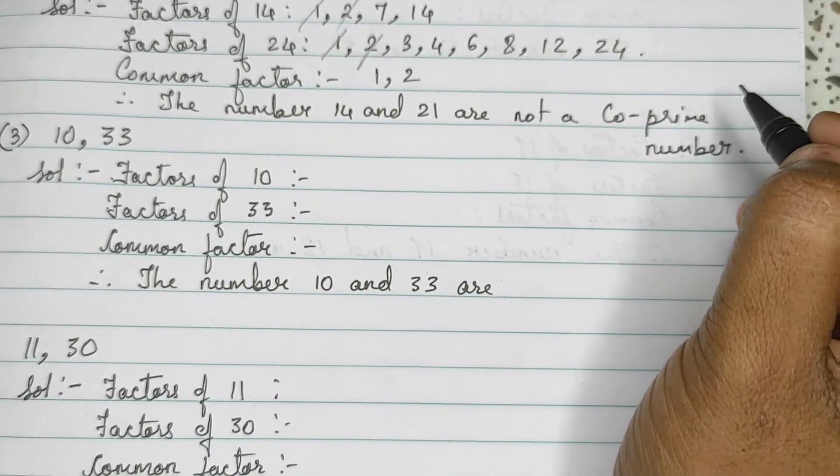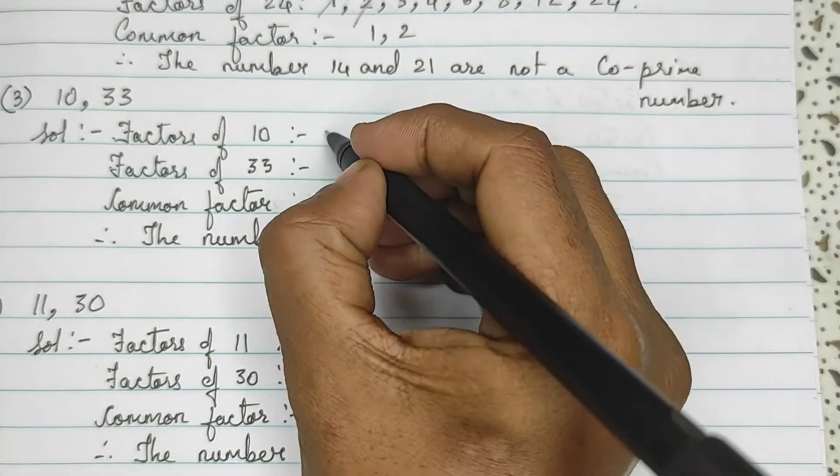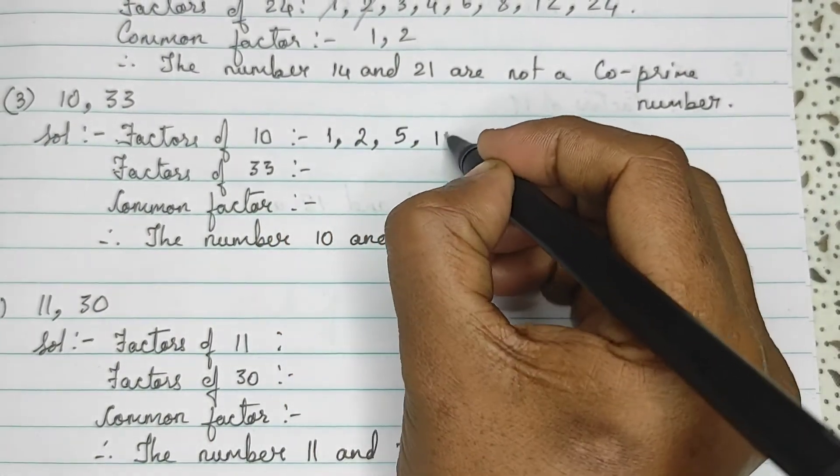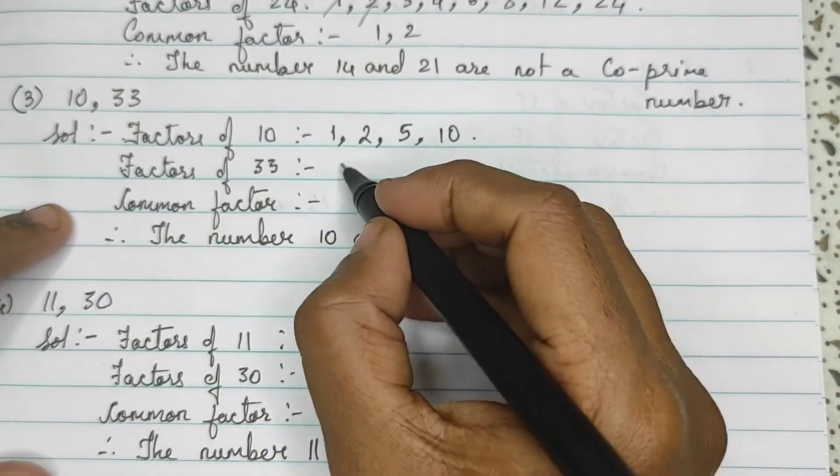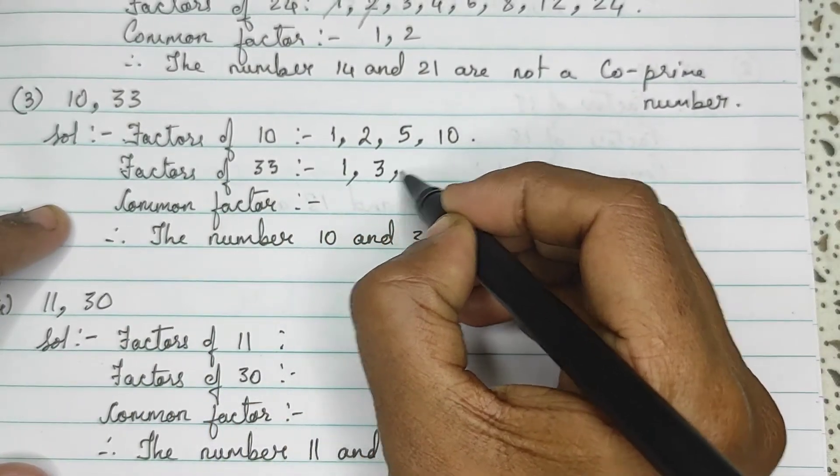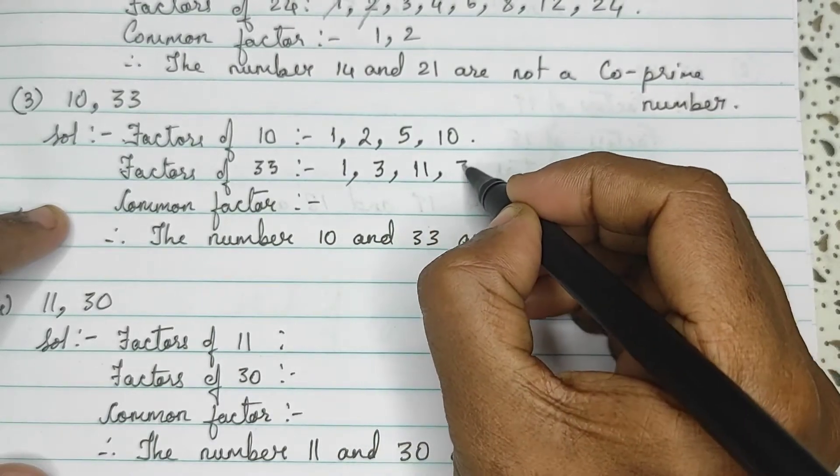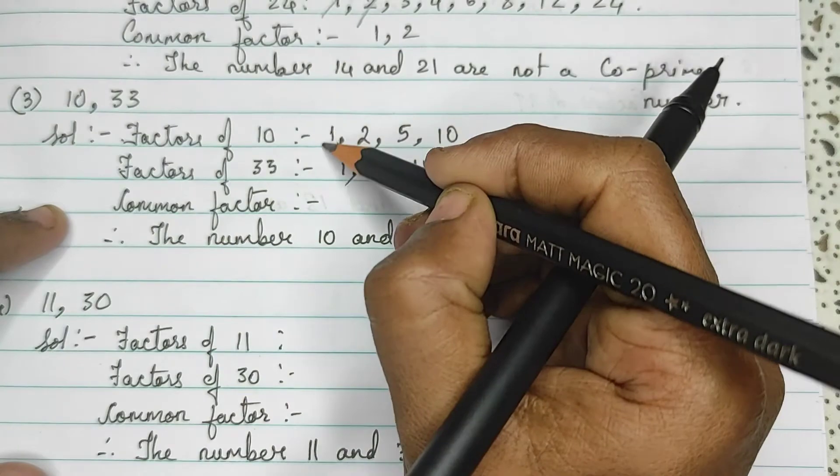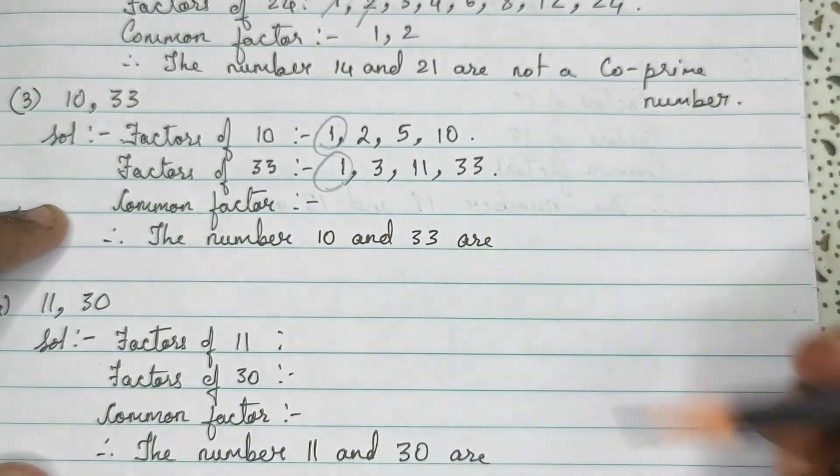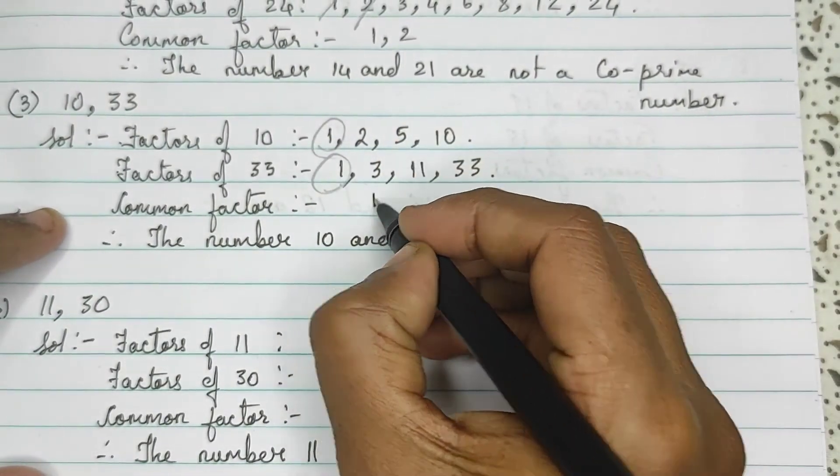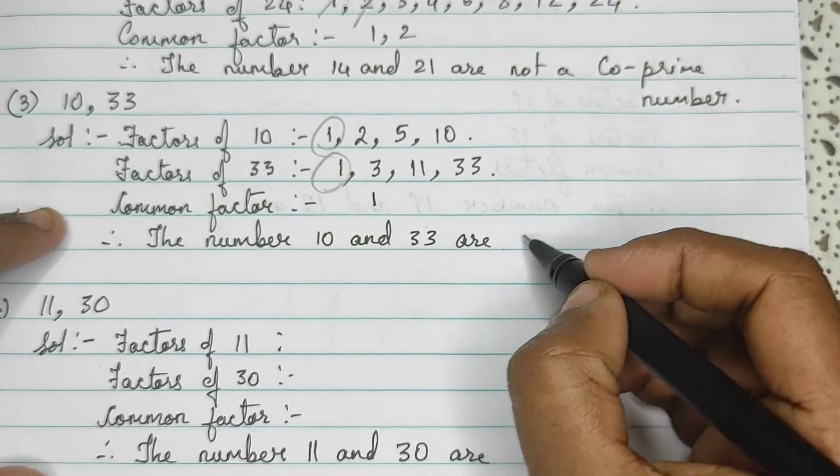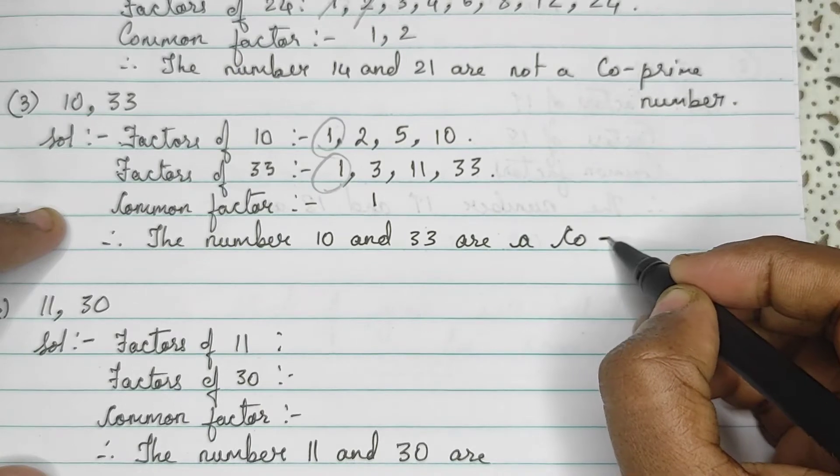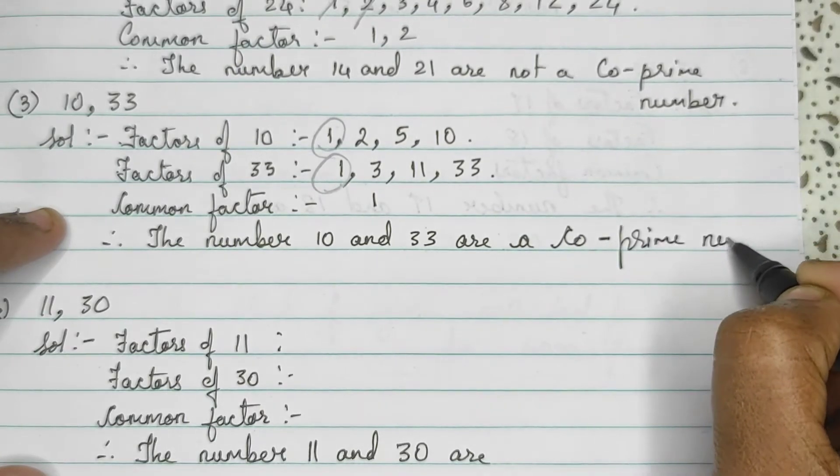Let's see further. 10 is divisible by 1, 2, 5 and 10. And 33 is divisible by 1, 3, 11, and 33. So, here common factor is only 1. There is no other common factor. So, the numbers 10 and 33 are co-prime numbers.